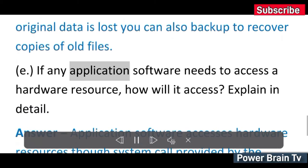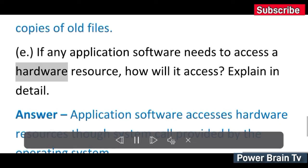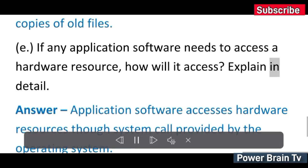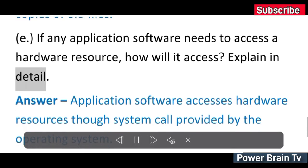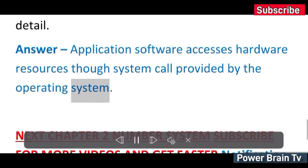(e) If any application software needs to access a hardware resource, how will it access? Explain in detail. Answer: Application software accesses hardware resources through system calls provided by the operating system.